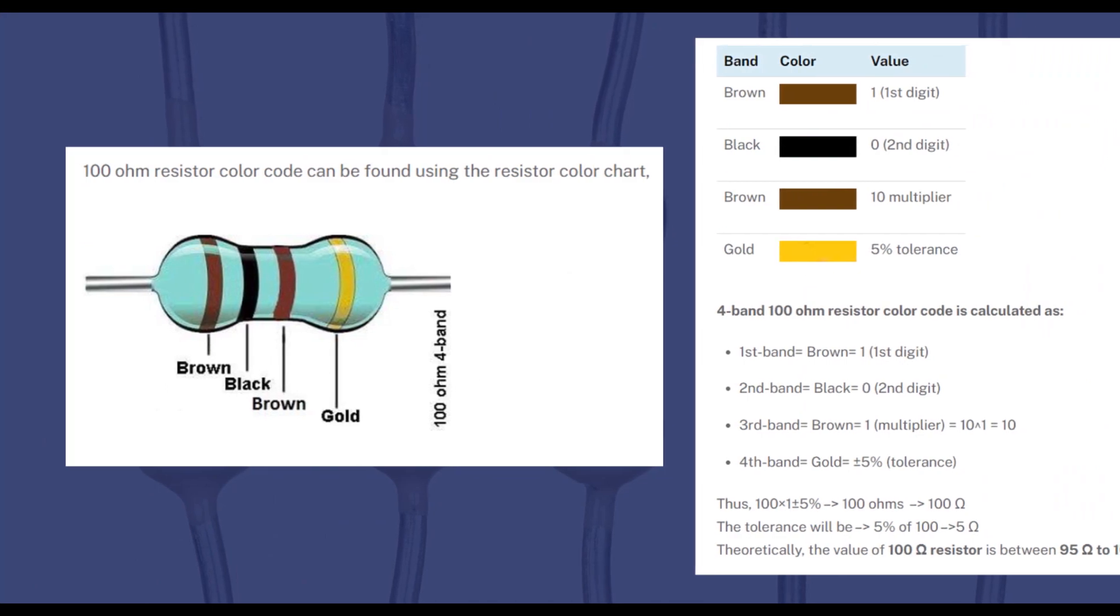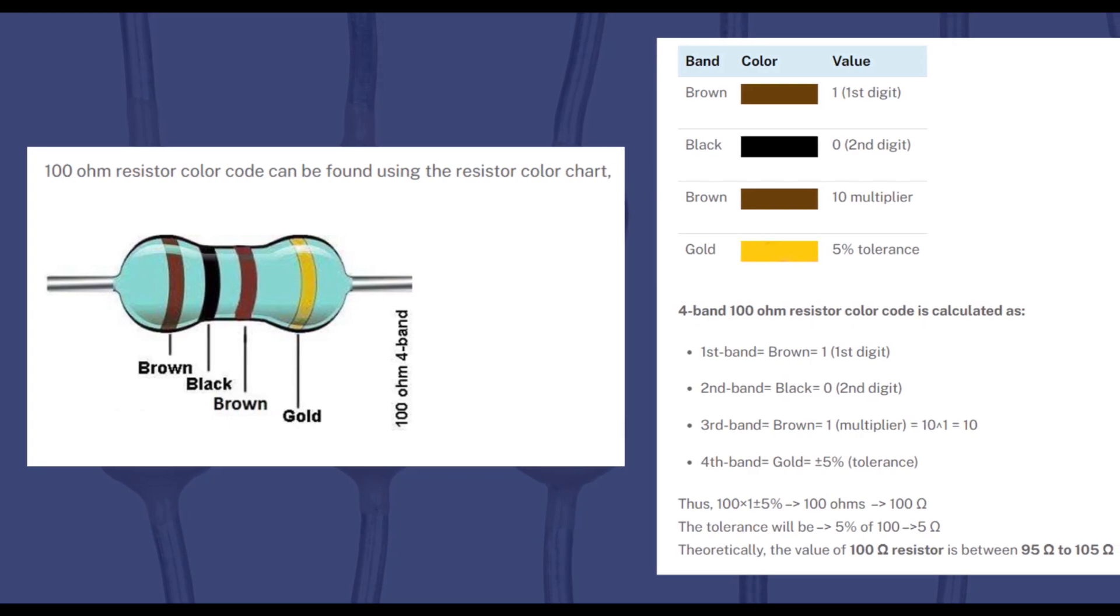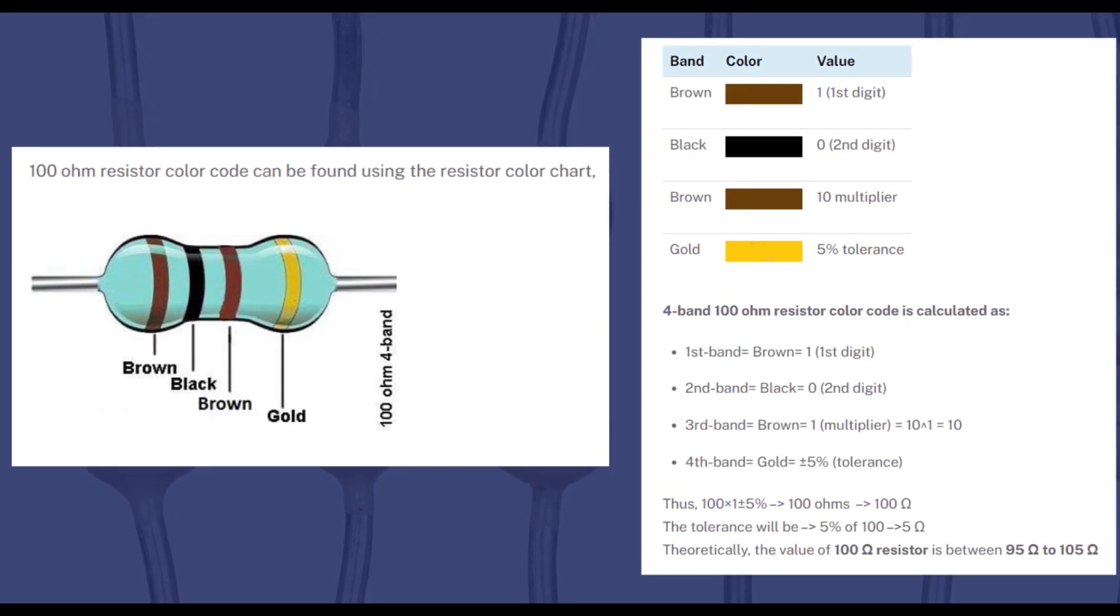So let's get started. As you can see, the color code of 100 ohm resistor in 4 band is: brown, black, brown, and gold.